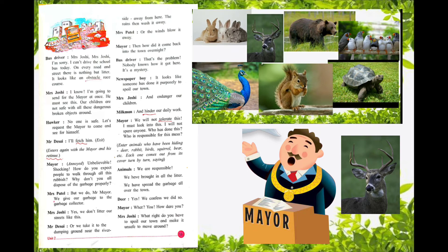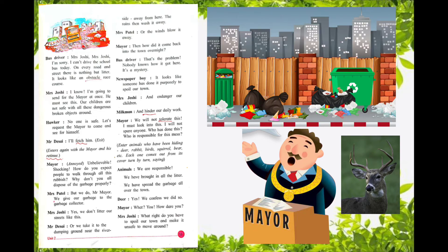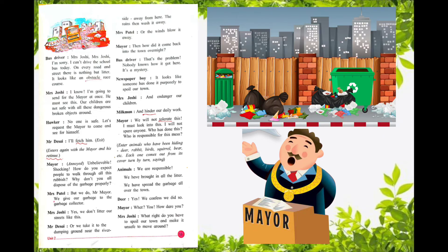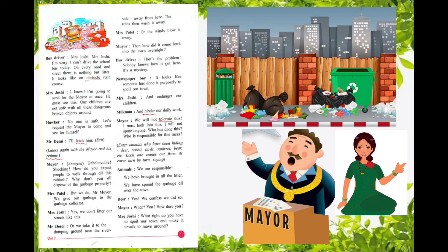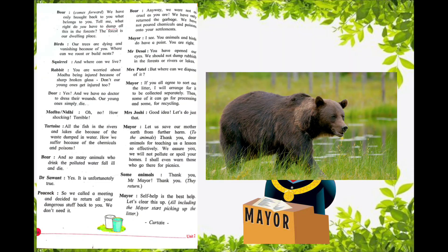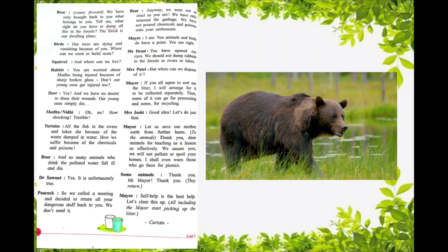The deer said, 'Yes, we confess — we did so.' The mayor said, 'What? You? How dare you!' Mrs. Joshi said, 'What right do you have to spoil our town and make it unsafe?' Then the bear said, 'Come forward — we have only brought back to you what belongs to you.'